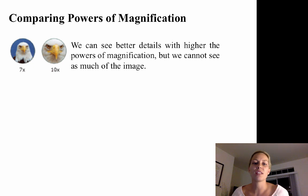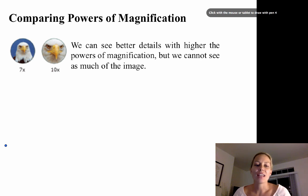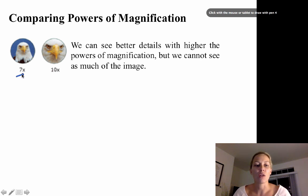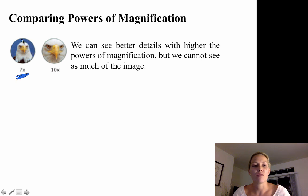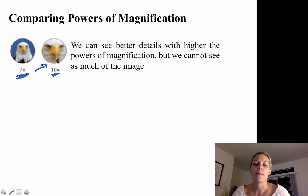Comparing powers of magnification: we can see better details with a higher magnification, but we can't see as much of the image. As magnification increases, our field of view decreases. Looking at the bald eagle example, under low magnification we can see the eagle, its beak, eyes, and the blue background. As we increase to 10x, the field of view decreases but we see more detail — the nostrils of the beak and the lines of the mouth.